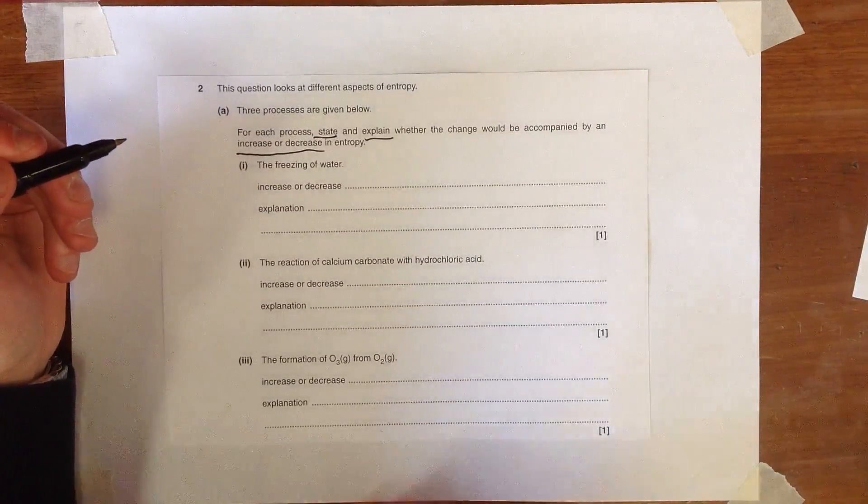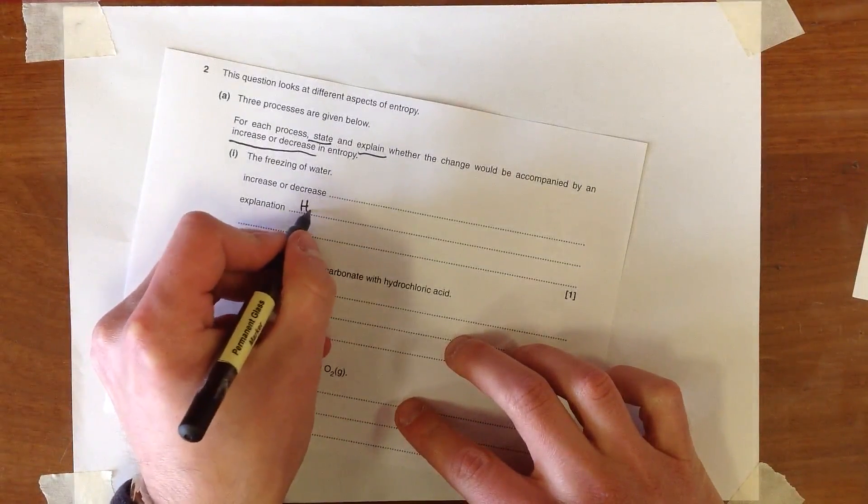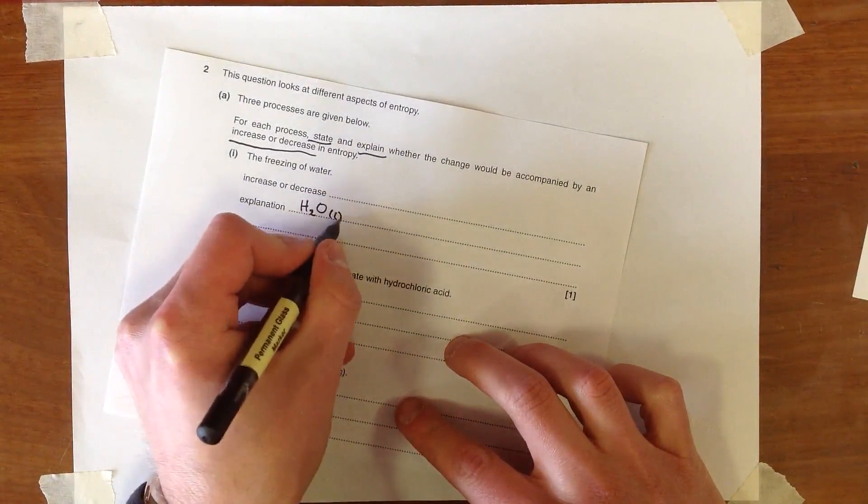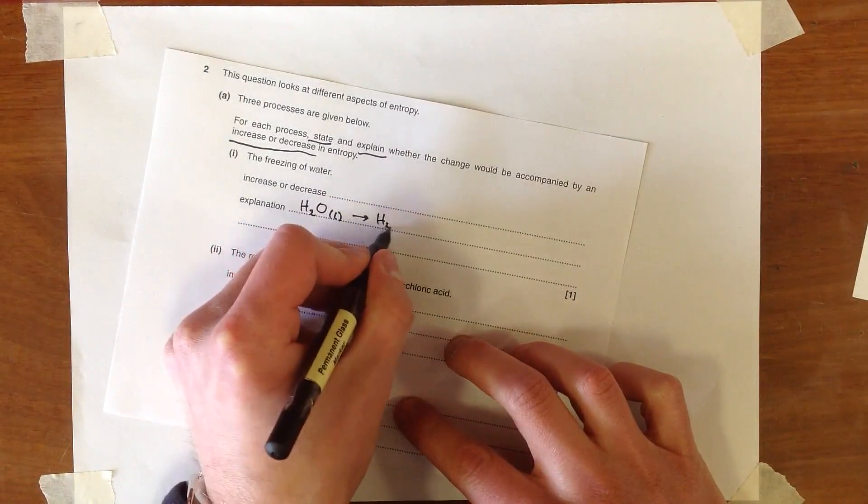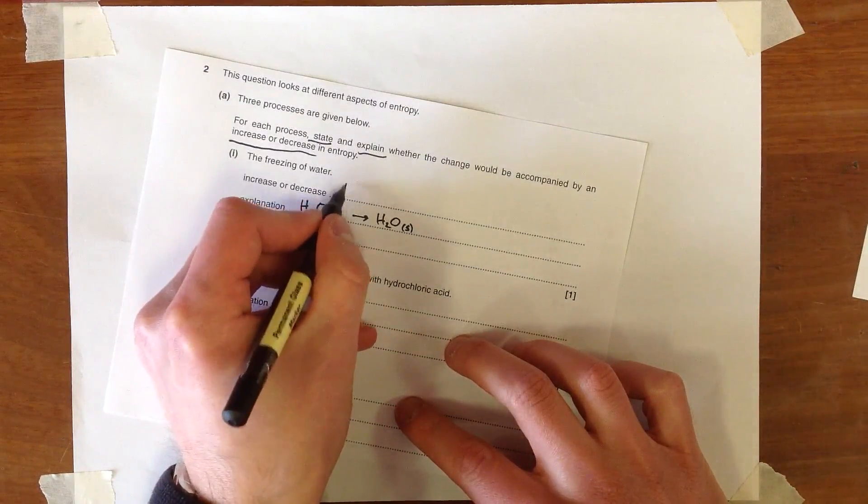So the first is the freezing of water. It's always a good idea to start this with an equation. H2O liquid is forming H2O solid. And we can see here that there is going to be a decrease in entropy.